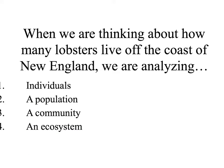Here's a review question. When we are thinking about how many lobsters live off the coast of New England, we may be analyzing... The correct answer is: a population. We are looking at how many lobsters there are in one area.